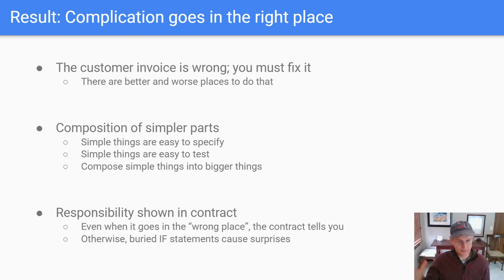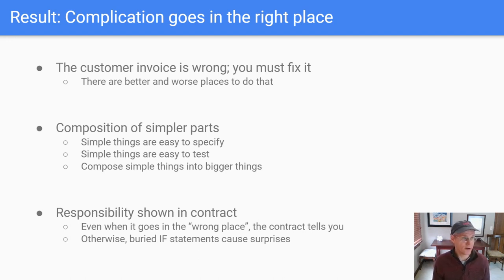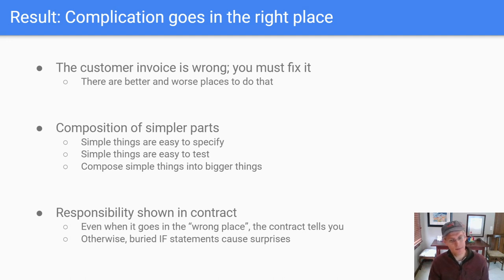The result of all this — the invisible hand nudging us in the right direction — is that you're going to have complications in your program, but contracts guide those complications into more appropriate places. Going back to the customer invoice example: the customer invoice was wrong and you have to fix it, but there are better or worse places that you can tuck away that logic. When we're programming with contracts and trying to keep them simple, we compose simpler parts into more complicated ones. We're going to have to find somewhere to fix that customer invoice, but it probably is not going to be the add routine because it had this terrible effect on the contract.